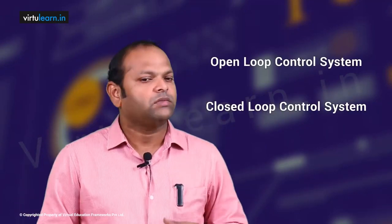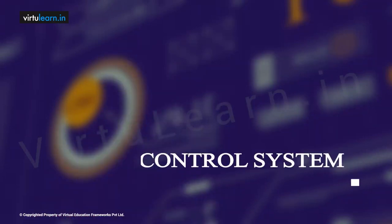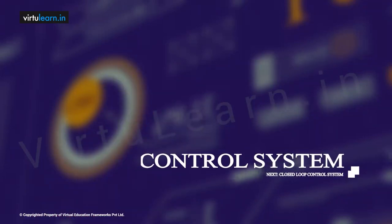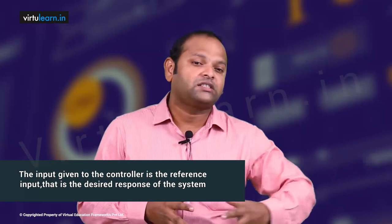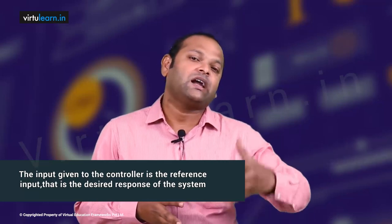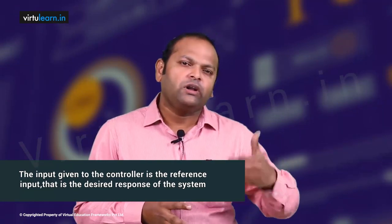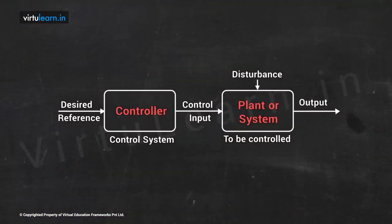In an open loop system, the input given to the controller is the reference input — that is, the desired response of the system. We give only that particular input. The control action depends only on the reference, which is the desired output you are expecting from the system.